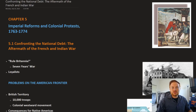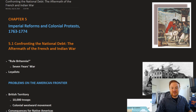This is OpenStax U.S. History, Chapter 5: Imperial Reforms and Colonial Protests, 1763 to 1774. This will be Section 1: Confronting the National Debt — the Aftermath of the French and Indian War. That's a very important point to start at.